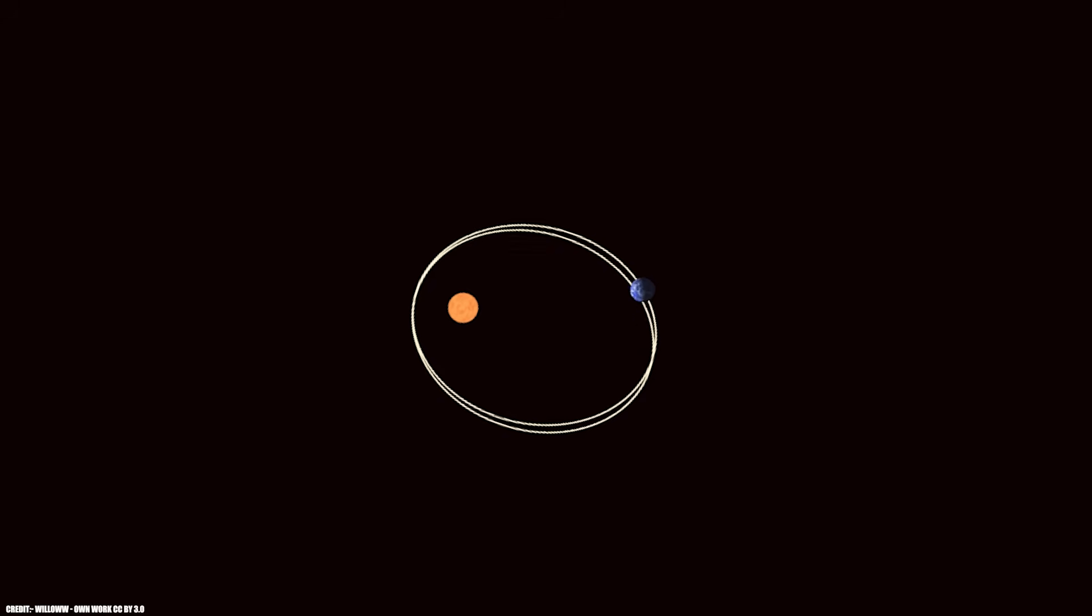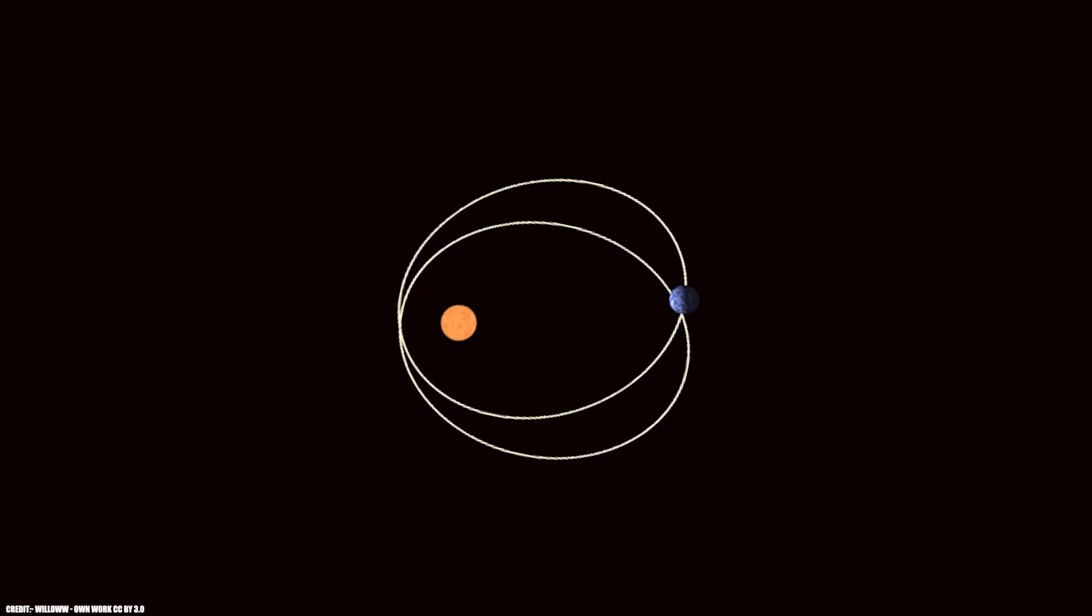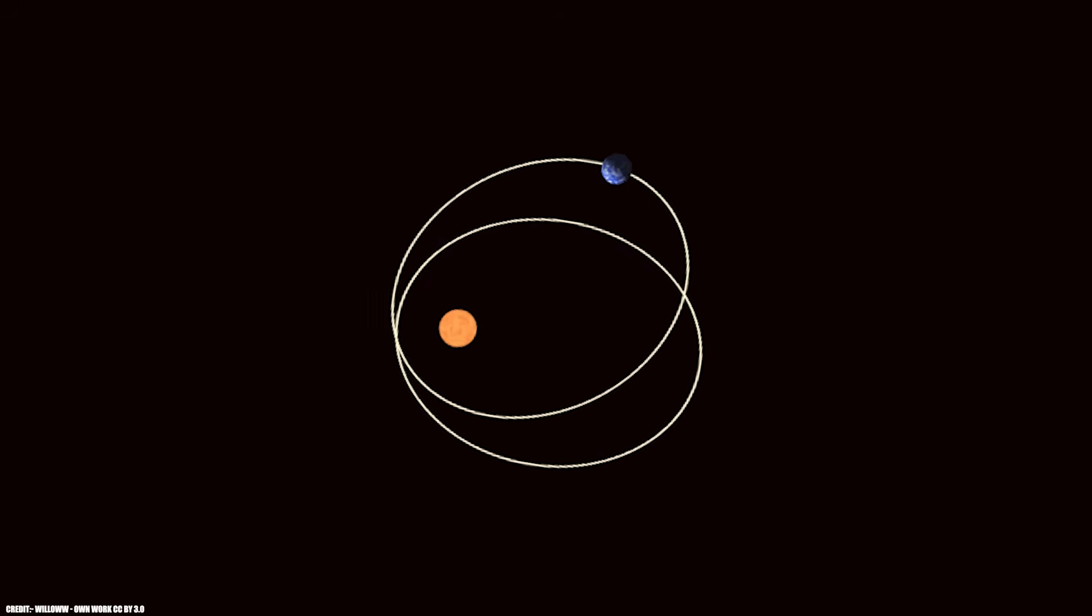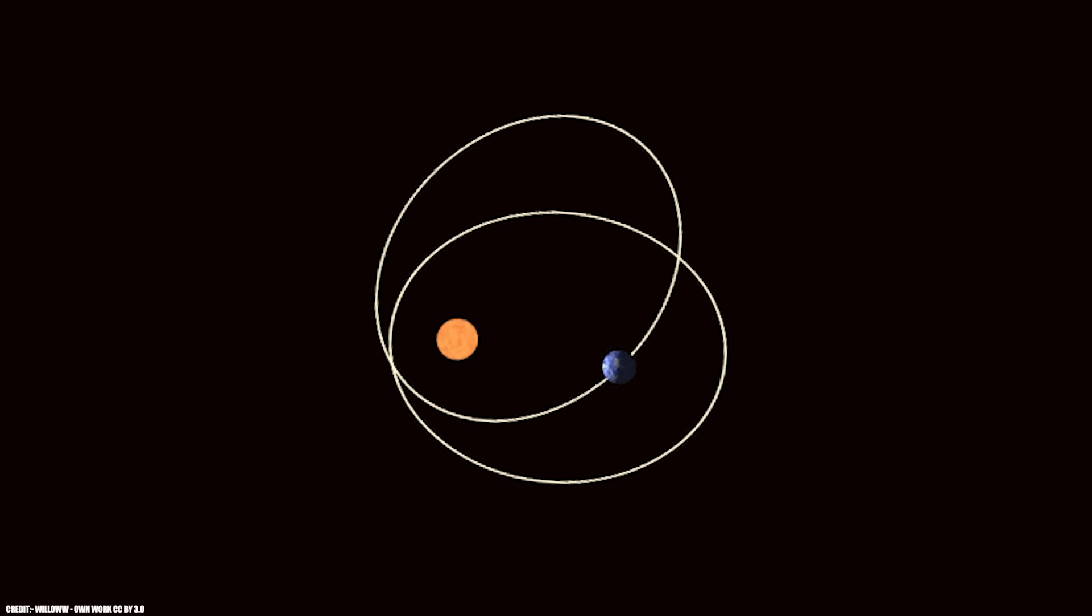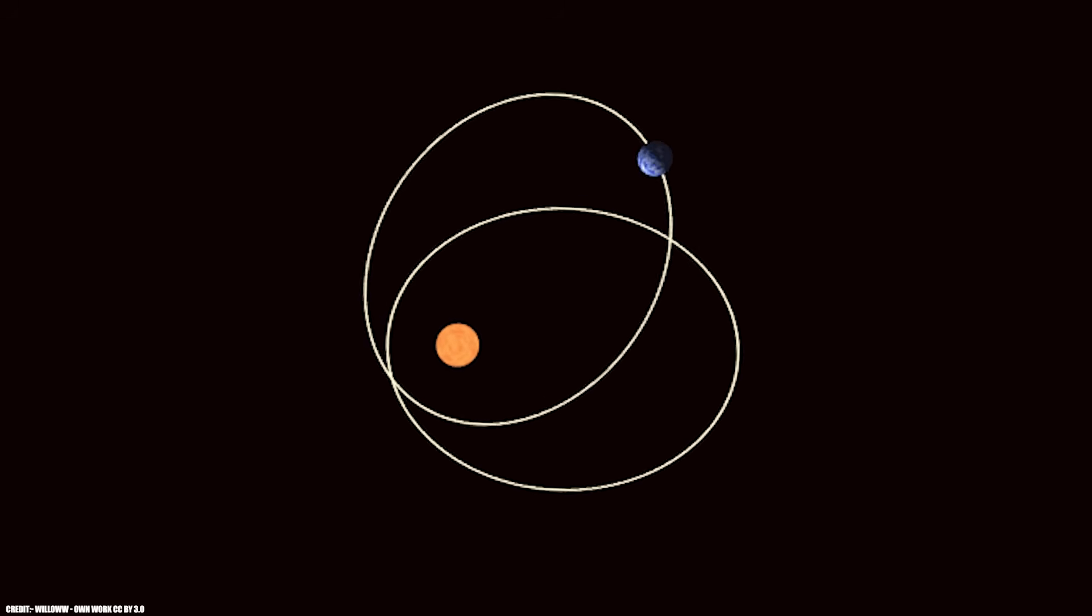Instead, researchers detected this new world through what's called retrograde apsidal precession. Essentially, the brown dwarf binary orbit was precessing backward from what physics predicted. Only a planet in a polar orbit could create this particular gravitational signature.